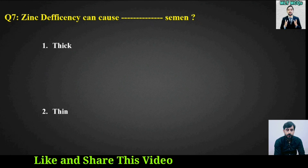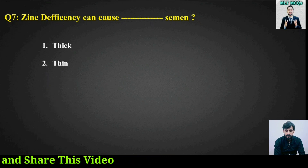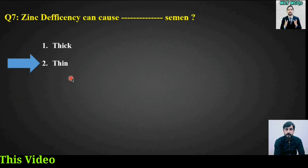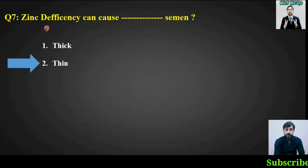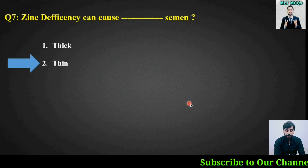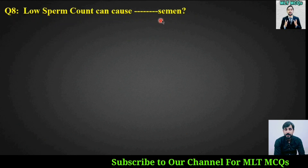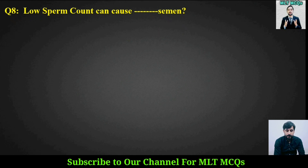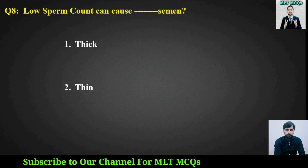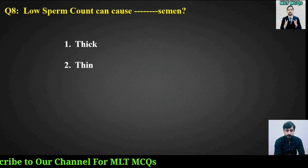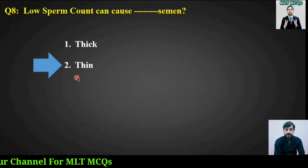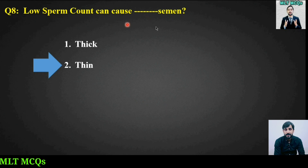MCQ number seven: Zinc deficiency can cause what type of semen — thick or thin? The right answer is thin; zinc deficiency causes thin semen consistency. MCQ number eight: Low sperm count can also cause what type of semen? The answer is again thin — low sperm count causes thin semen consistency.